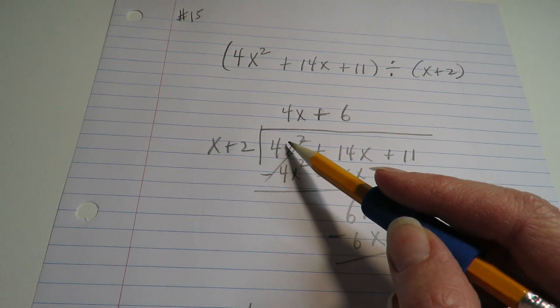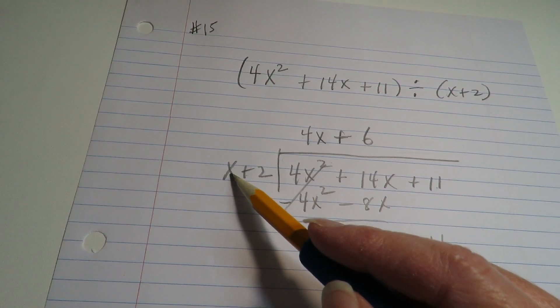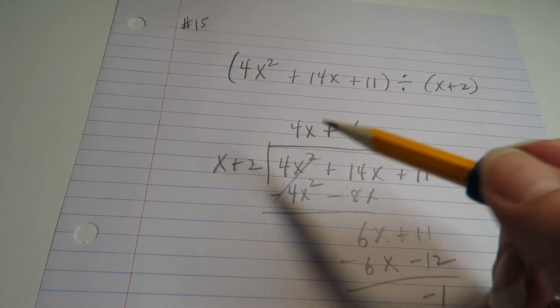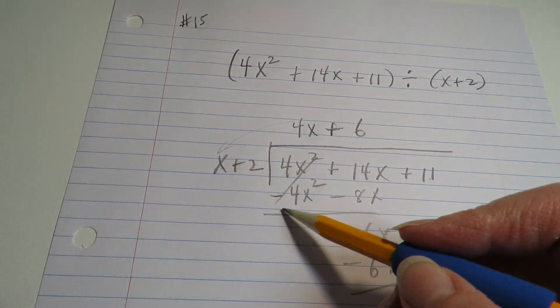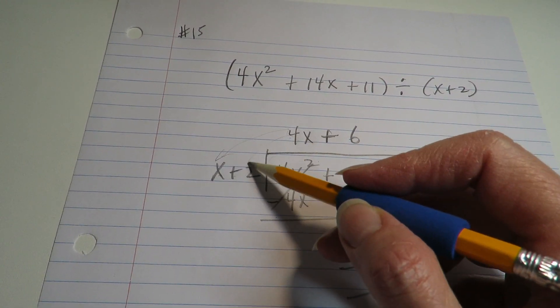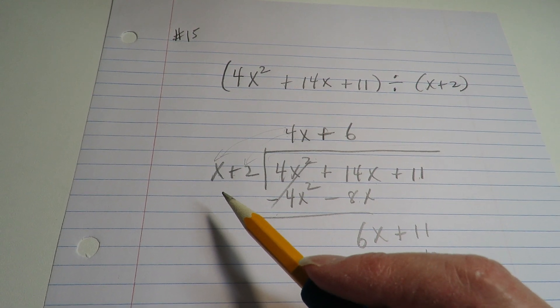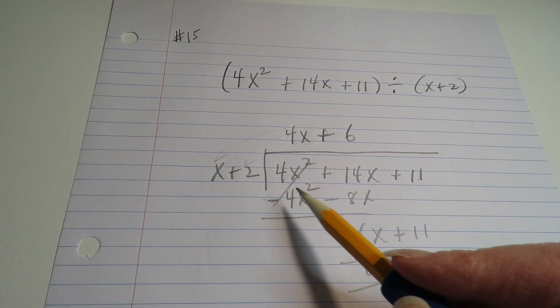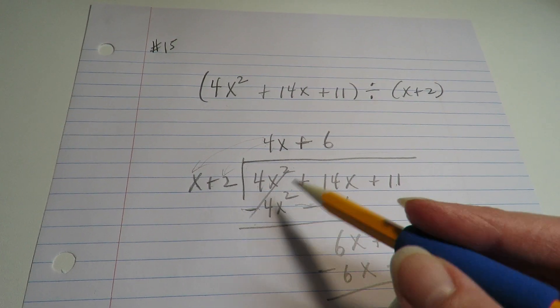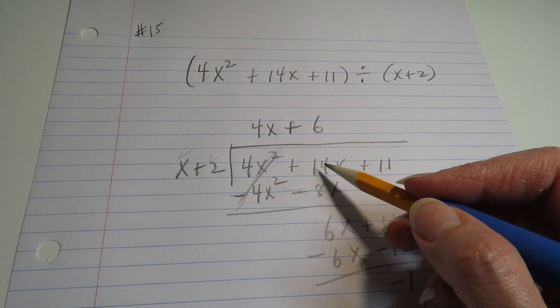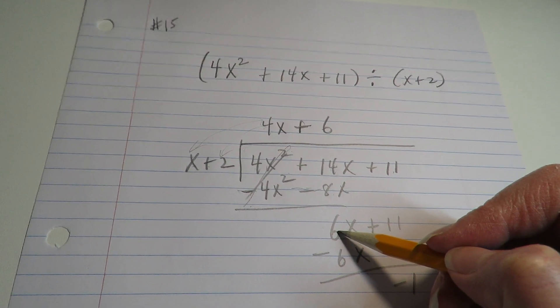All right, so you have to make a 4x squared from an x, which means you have to multiply it by 4x. So 4x times x is 4x squared. 4x times 2 is 8x. And remember, division is implied subtraction, so you have to opposite the signs. So this goes to 0, and then 14 minus 8 is 6.